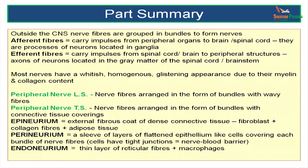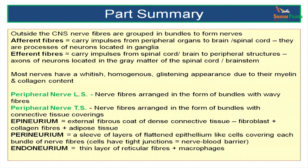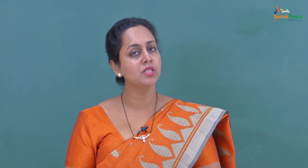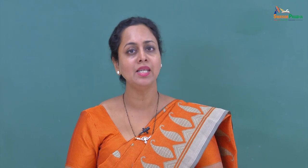The nerve is outside the central nervous system. Nerve fibers are grouped into bundles to form nerves with afferent fibers carrying sensation from periphery to CNS and efferent carrying motor impulses from CNS to periphery. Most nerves have a whitish appearance due to myelin and collagen content. The peripheral nerve has been looked at in longitudinal and transverse sections, with nerve fibers grouped in bundles called fascicles. Epineurium is the dense connective tissue covering the entire nerve; each fascicle is covered by a perineurium; and the innermost delicate lining is the endoneurium covering each single nerve fiber.